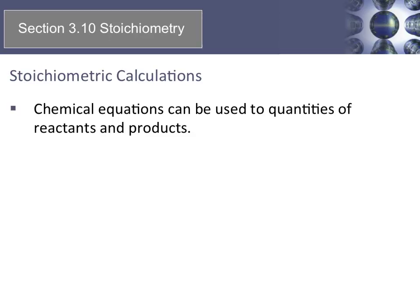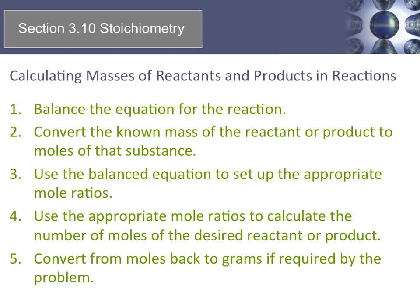Now let's look at using dimensional analysis for stoichiometry problems. We'll use a chemical equation to predict quantities of reactants and products. We always need a balanced chemical equation, and then we can use the coefficients as our mole ratio. Sometimes, before we can utilize a mole ratio, we have to do some converting — these problems look at mass and converting it to moles. Other options include gas volume and molarity. We use DA to convert mass to moles, apply the mole ratio, then convert back to grams or any other unit.